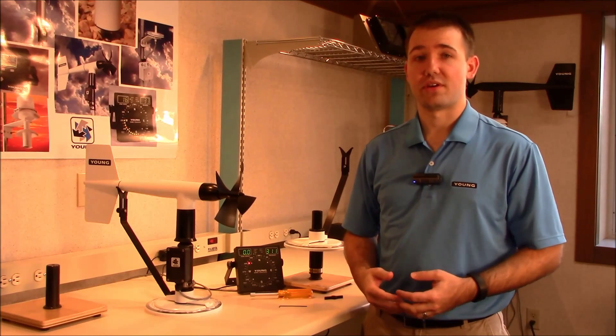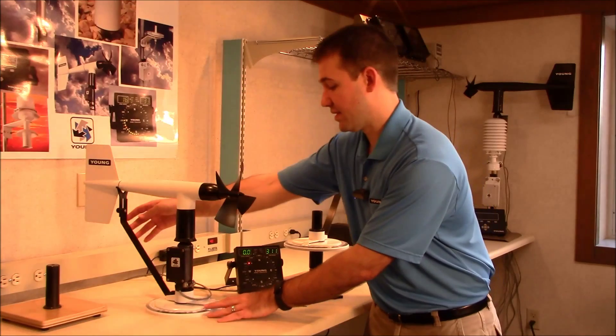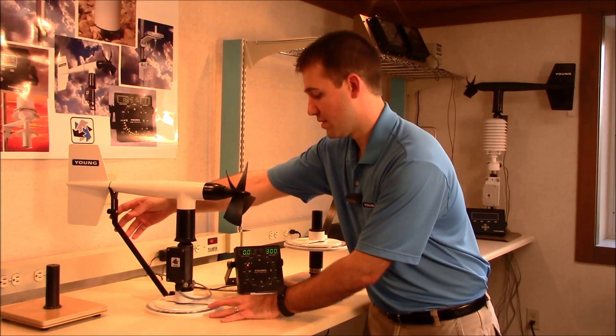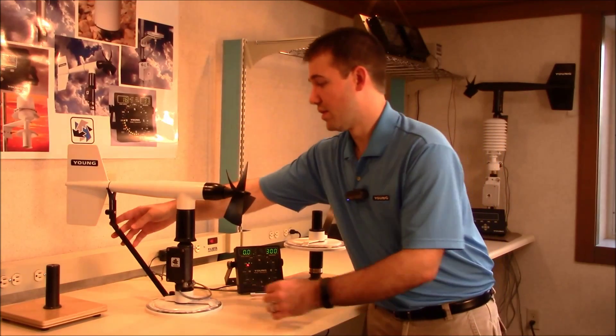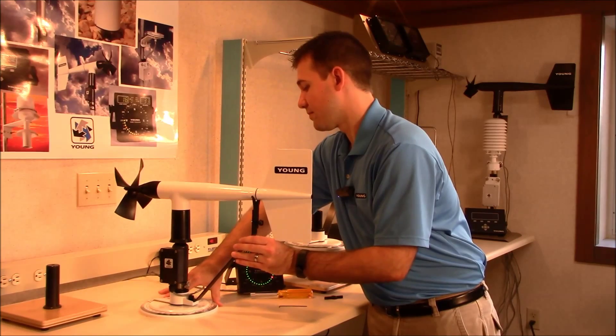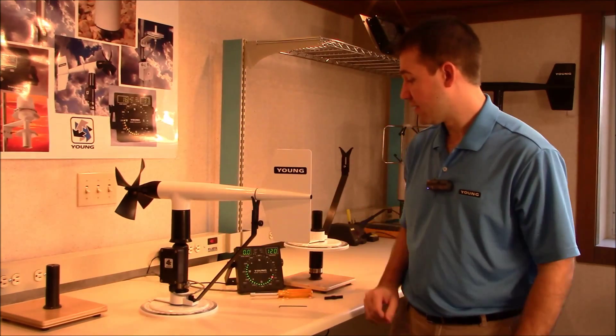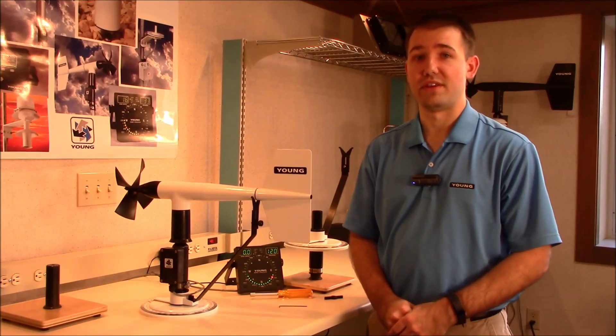Now I'm going to check a couple of wind directions to verify if it needs to be adjusted. I'm going to set it to 90 degrees, and the display is showing 300. Change it to 270, and the display is showing 120 degrees. This wind monitor needs to be adjusted.